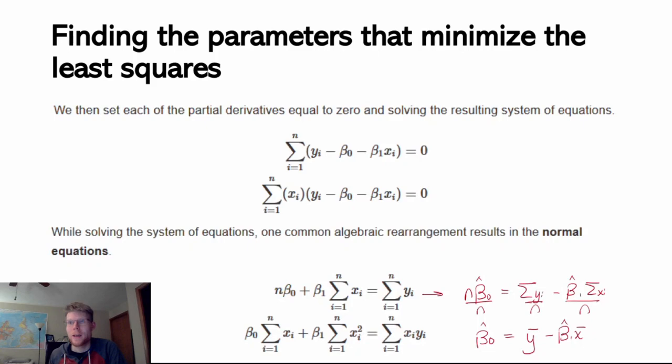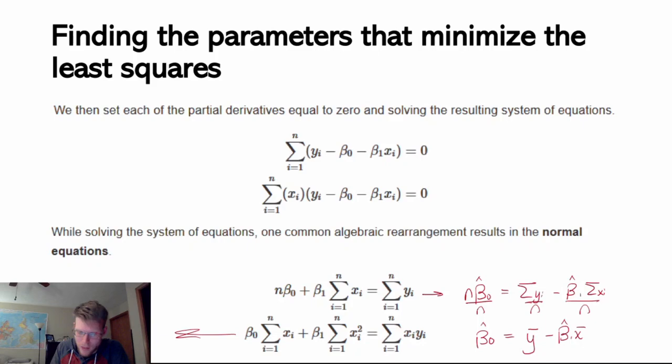I have a term for beta hat 0, but it is in terms of beta hat 1. Now I can go back to solving for beta hat 1 and replace beta hat 0 with this term. One difference in the expression is that I multiplied x sub i into the term — since this is going to be set equal to 0, multiplying anything in here doesn't actually change the expression, and it gives me a different representation that makes the algebra a little bit easier.